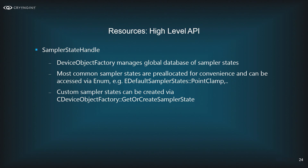The sampler state handle represents texture sampling configuration. Inside the device object factory there's a global database of sampler states with heavy sharing. We've pre-allocated the most common ones in an enum: EDefaultSamplerStates::PointClamp, WrapTrilinear, ClampTrilinear, and so on. If you need a custom state not predefined, you can always go through GetOrCreate.